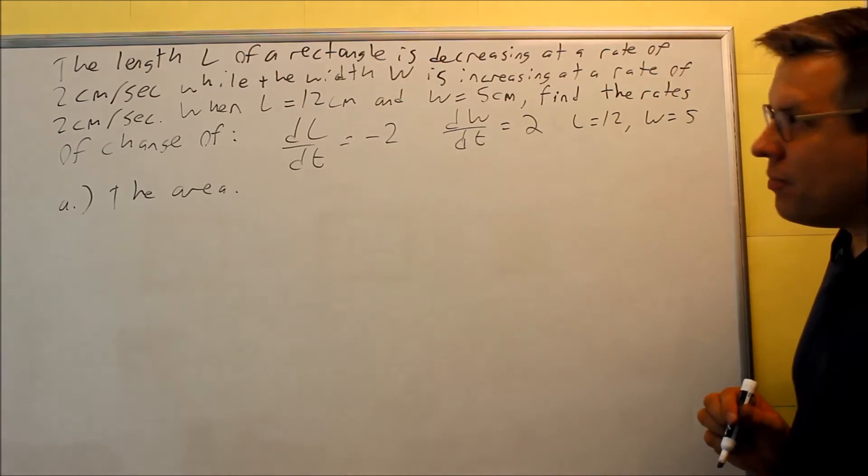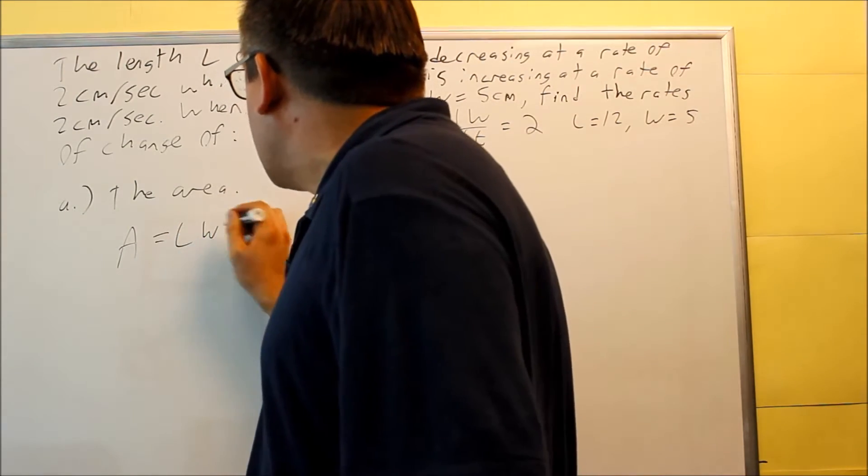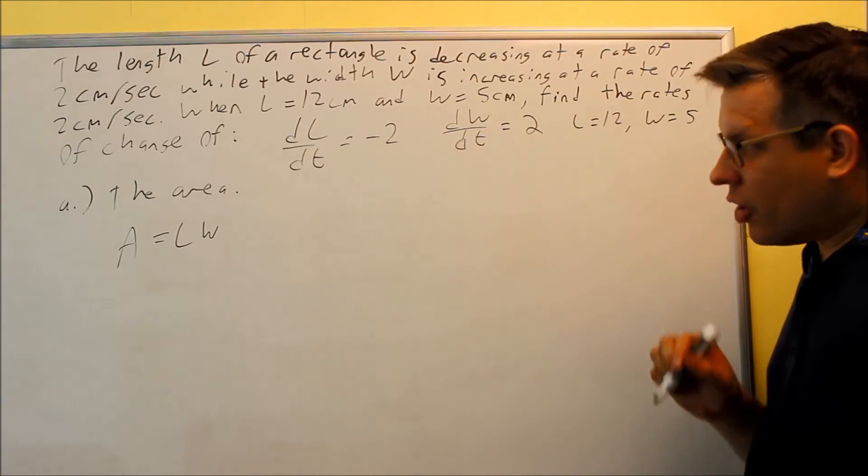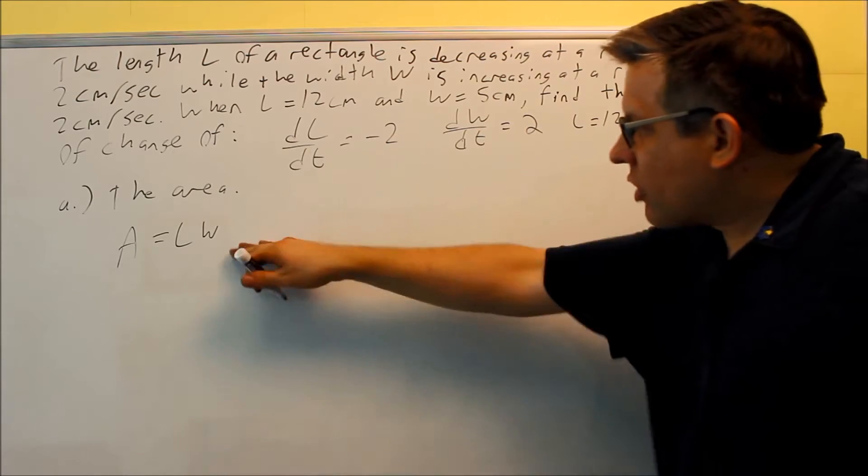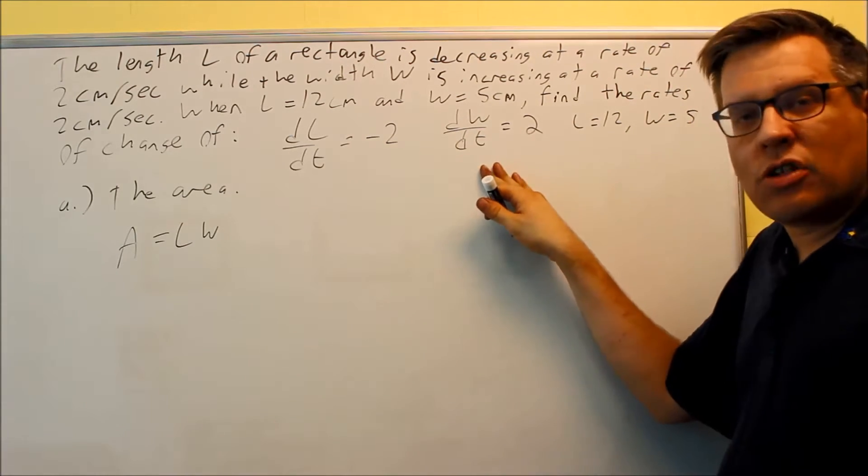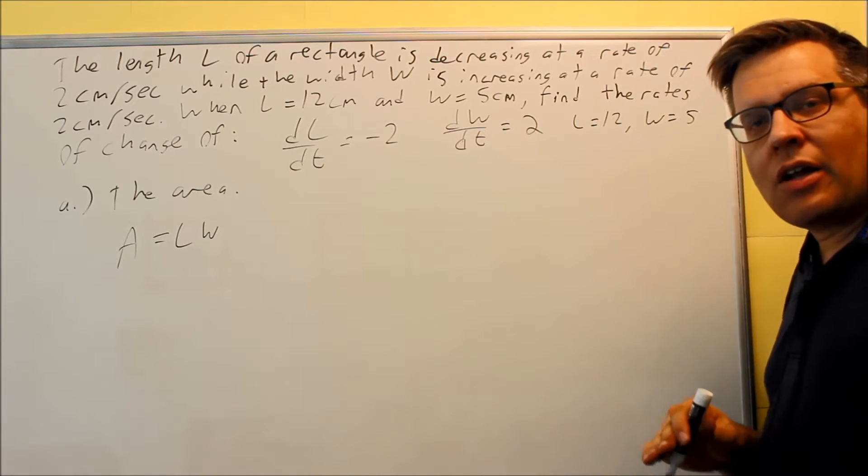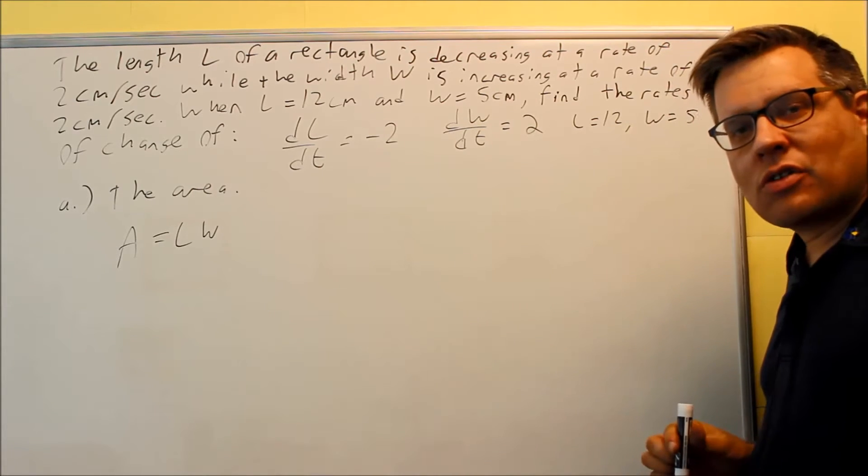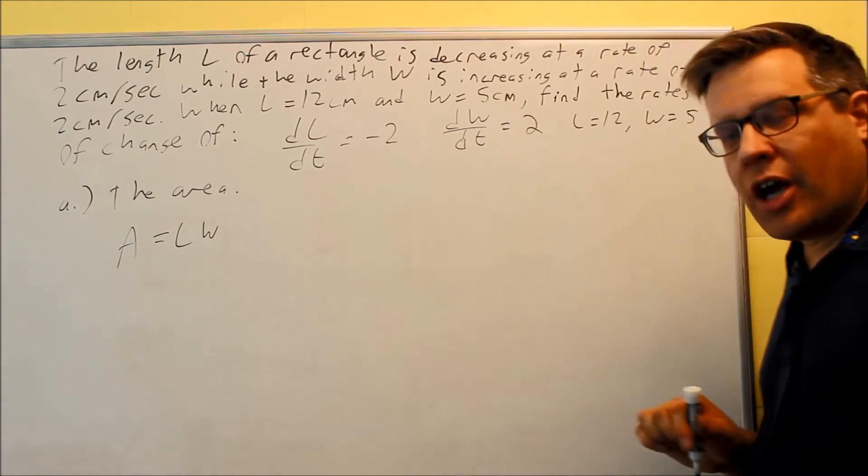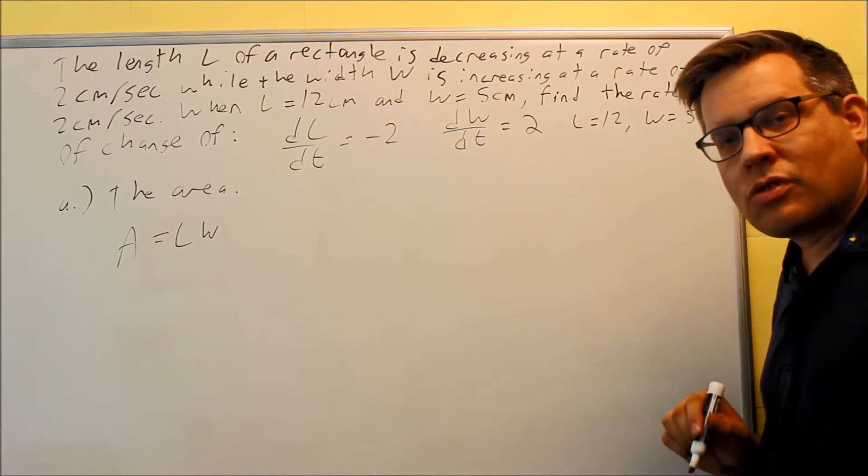Let's start with the area. The area of a rectangle is length times width. This problem does have two variables, but that's okay. I can go ahead and take the derivative of both sides because I'm actually given information about two different variables. The problem I did previously involving the cone had radius and height, but no information was given as far as the radius is concerned, so we had to make a substitution. But this one, we don't need to do that. I'm going to take the derivative as is, and because I'm multiplying two things together, I need to use the product rule.